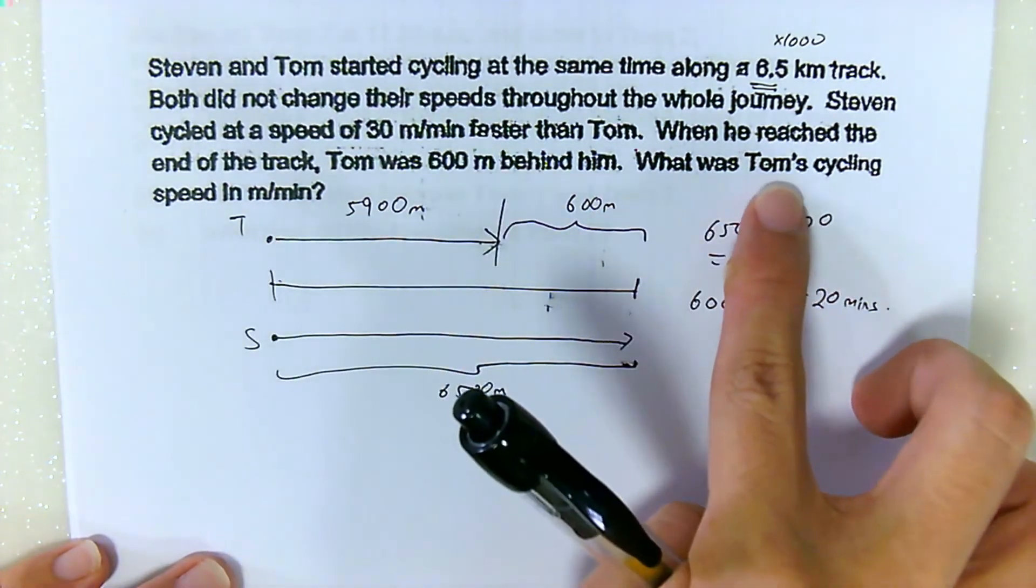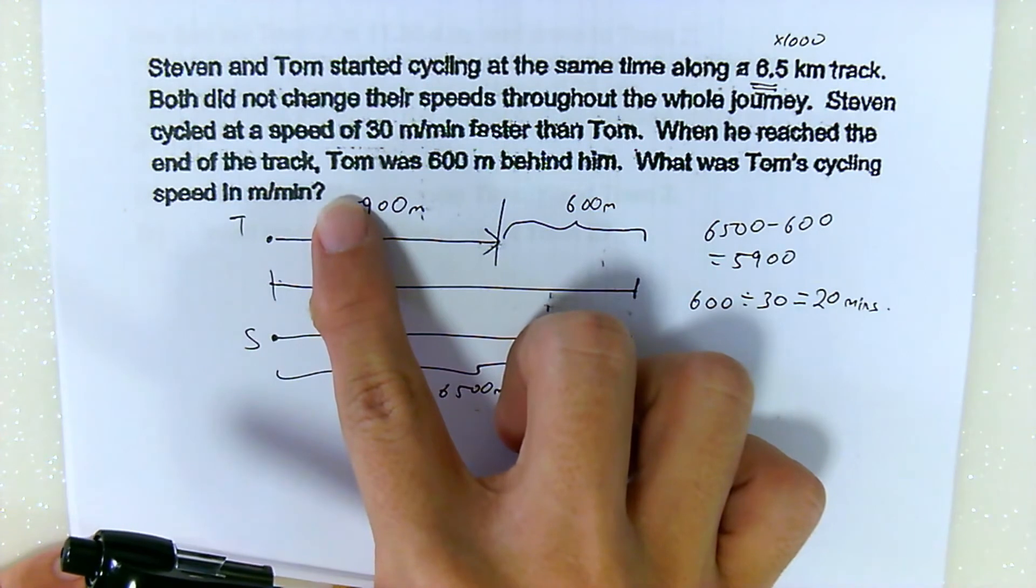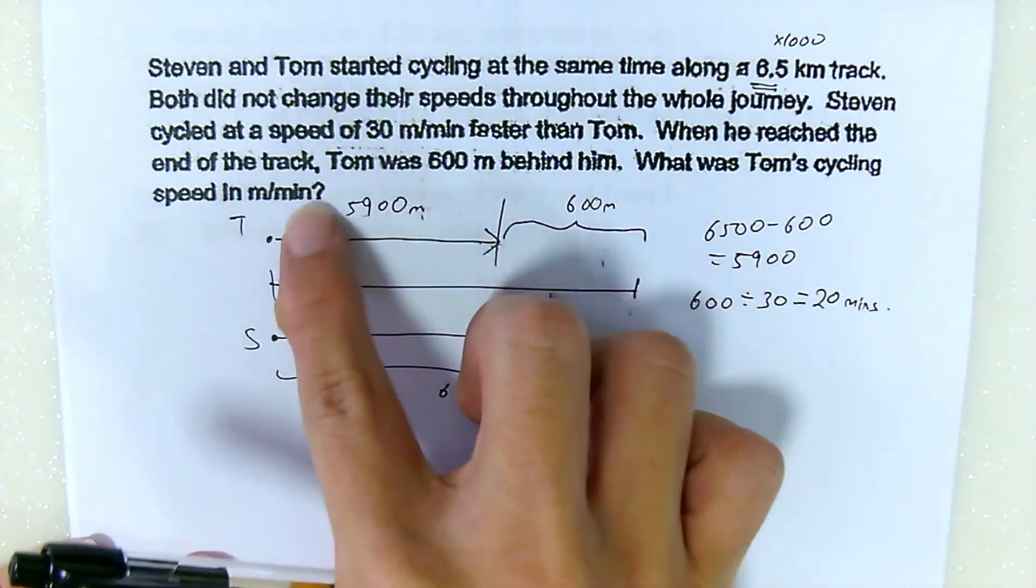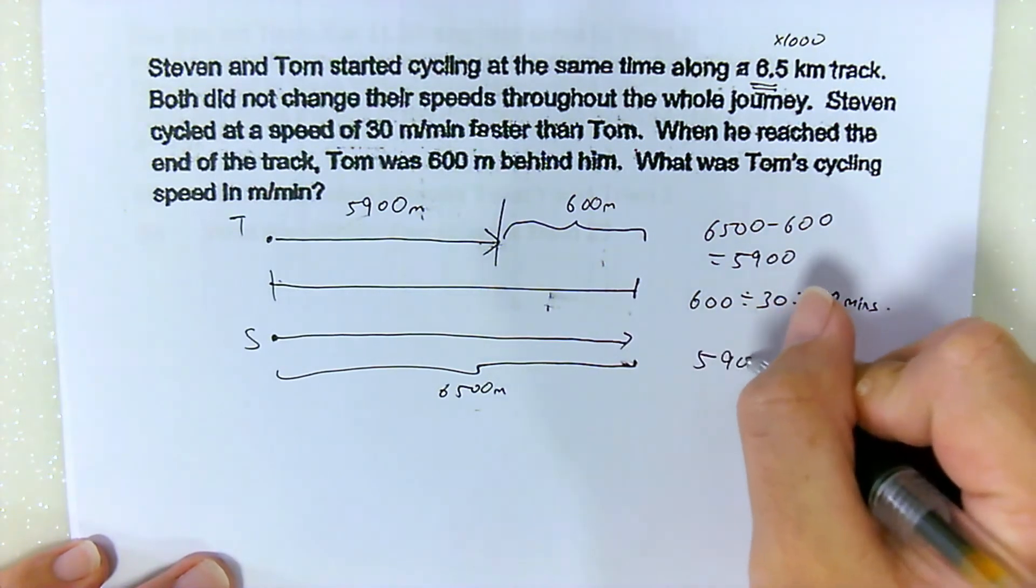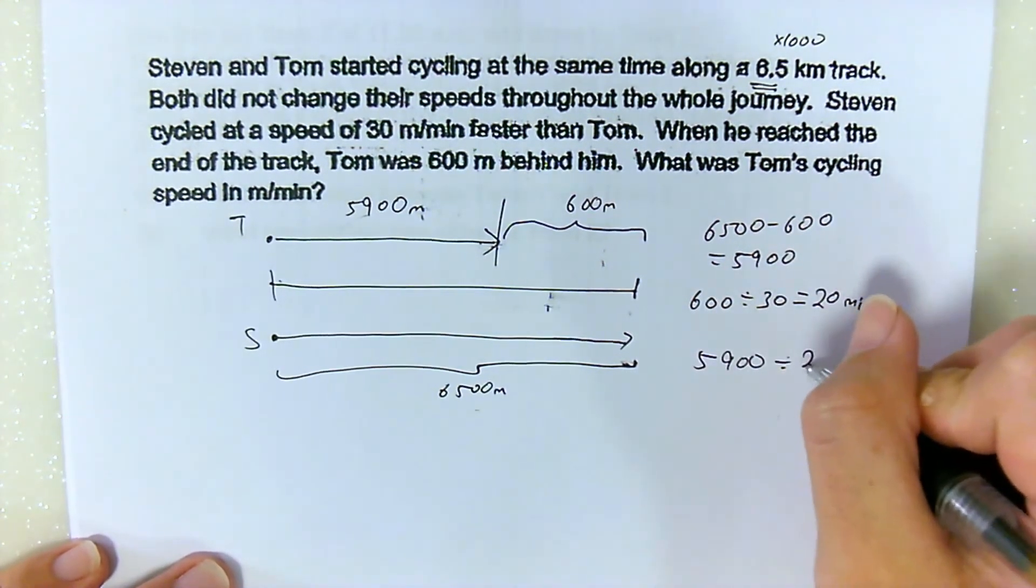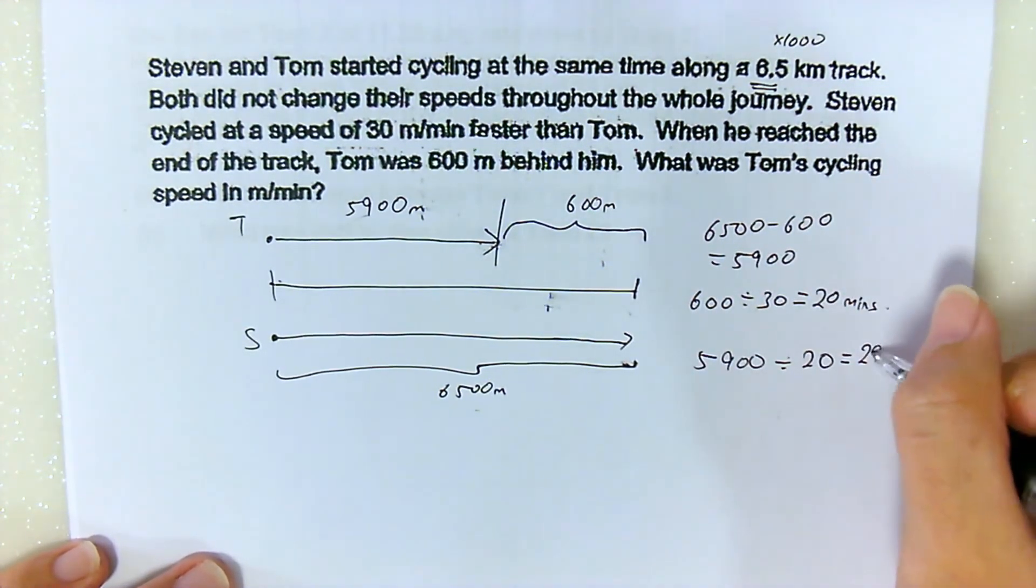So I'm going to find Tom's cycling speed. Tom's cycling speed, you just take the distance divided by time. So if you take 5,900 divided by 20, that will give you 295.